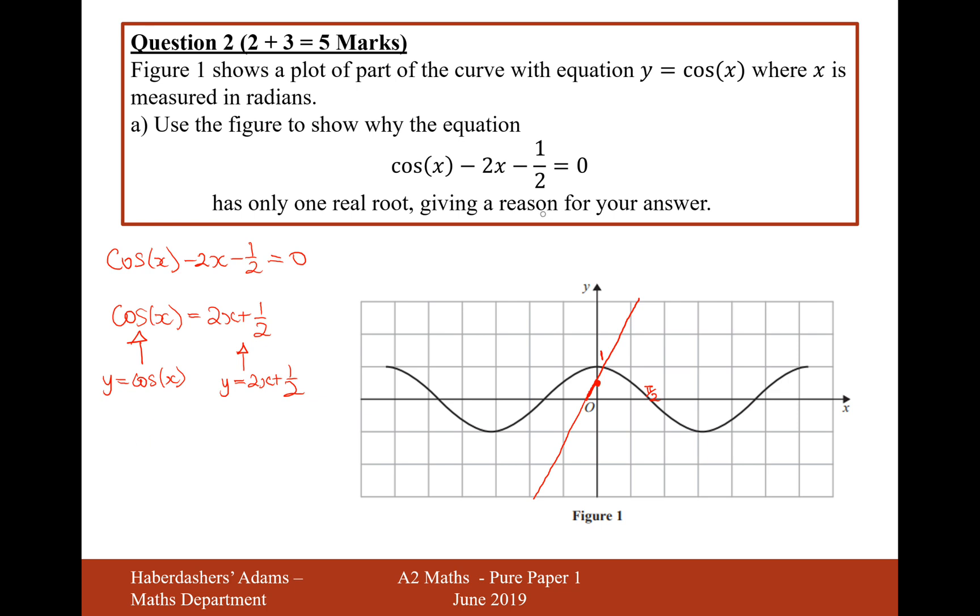So now we need to write an explanation for the second mark. This is y equals 2x plus one-half. Given that y equals cos x and y equals 2x plus one-half has only one intersection.